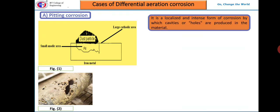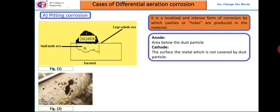One case of differential aeration corrosion is pitting corrosion. Pitting corrosion is a localized and accelerated corrosion resulting in the formation of pits or pinholes, around which the metal is relatively unattacked. Consider a dust particle settled on an iron metal — the area below the dust particle acts as the anode, whereas the surface of the metal not covered by the dust particle acts as the cathode.